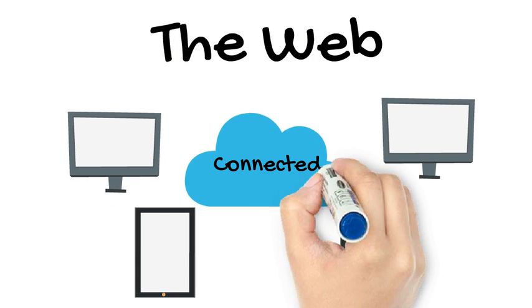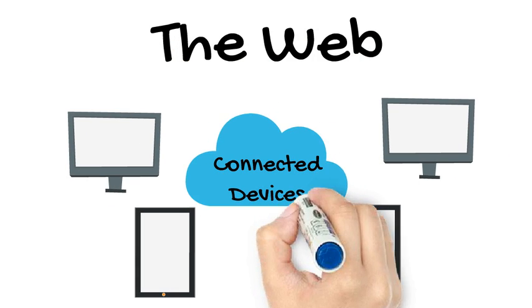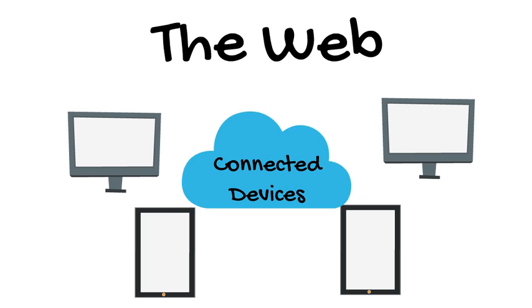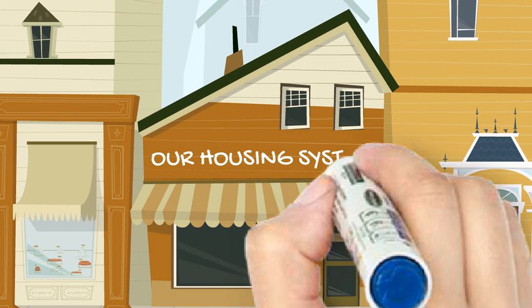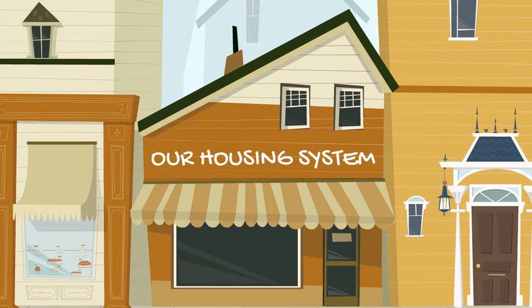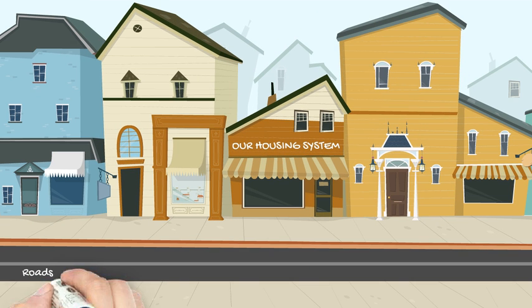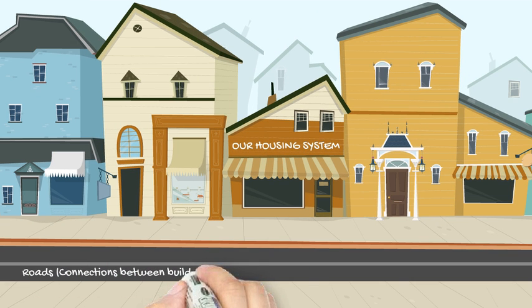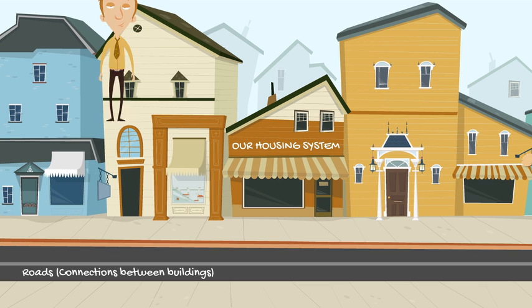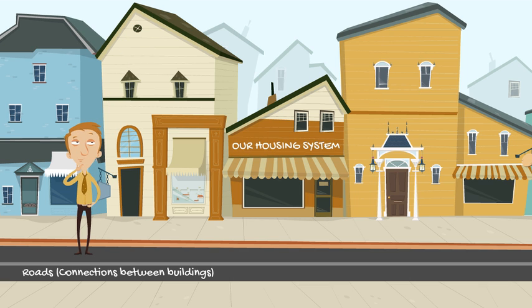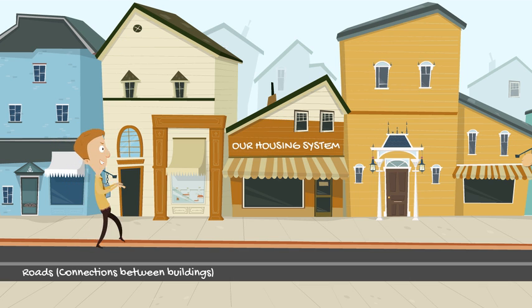But that's not what the web really is. The web is a complex network of devices linked to one another using different types of connections. You can imagine it like our housing system distribution. There are buildings like stores and houses, and there are roads, which are the connections between those buildings. If you want to go from one place to another, you have to use those roads.